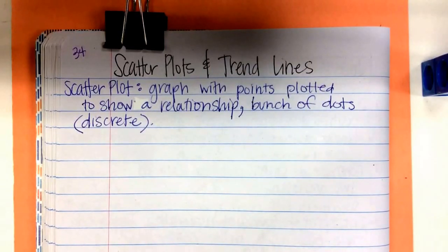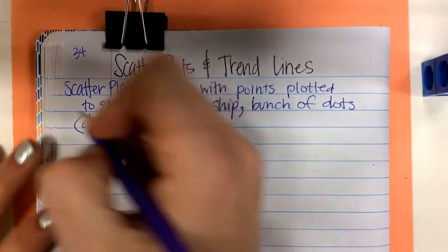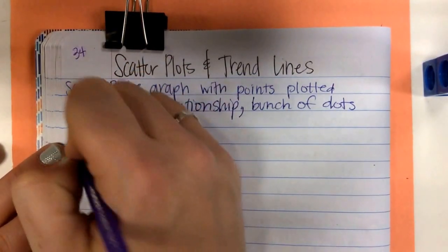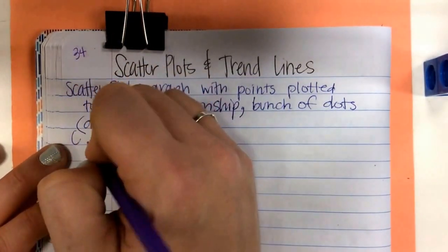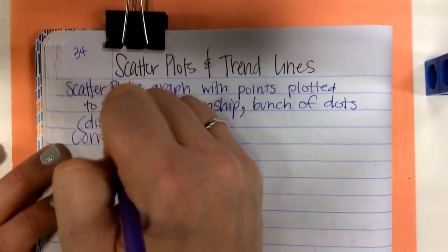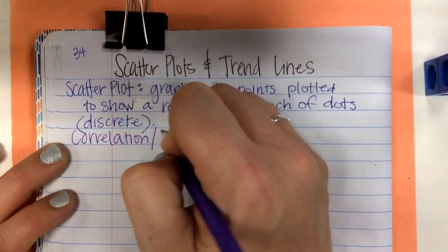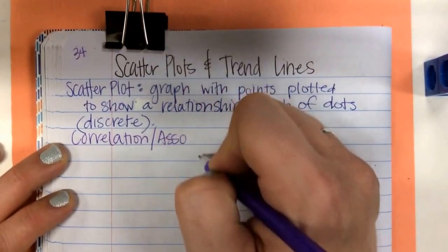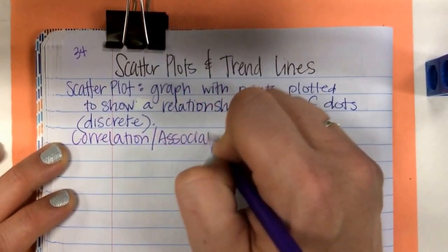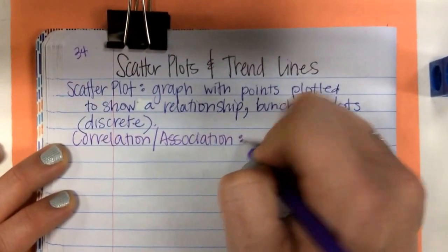And scatter plots are classified into three sets. There are three types of categories. And those categories are called correlations. Or sometimes you can call them associations. A-S-S-O-C-I-A-T-I-O-N. Associations.